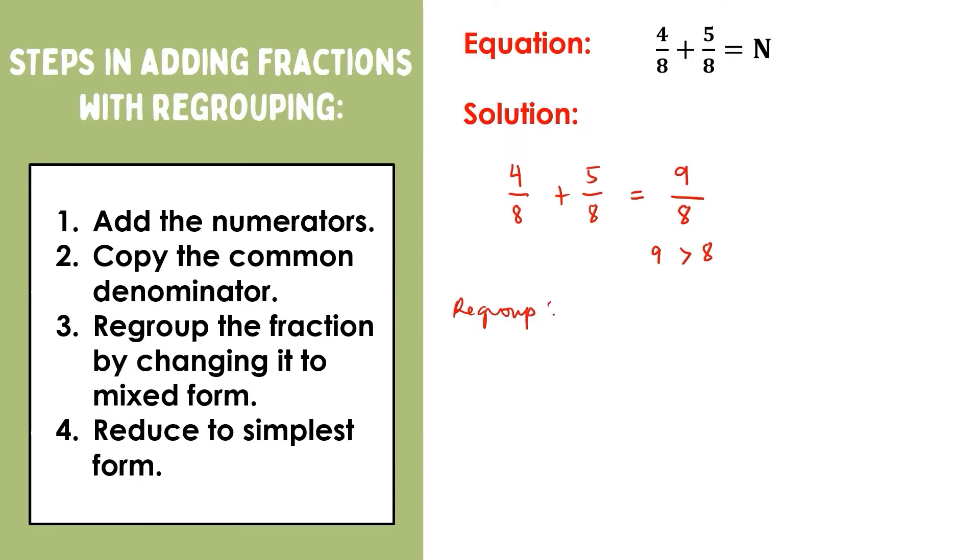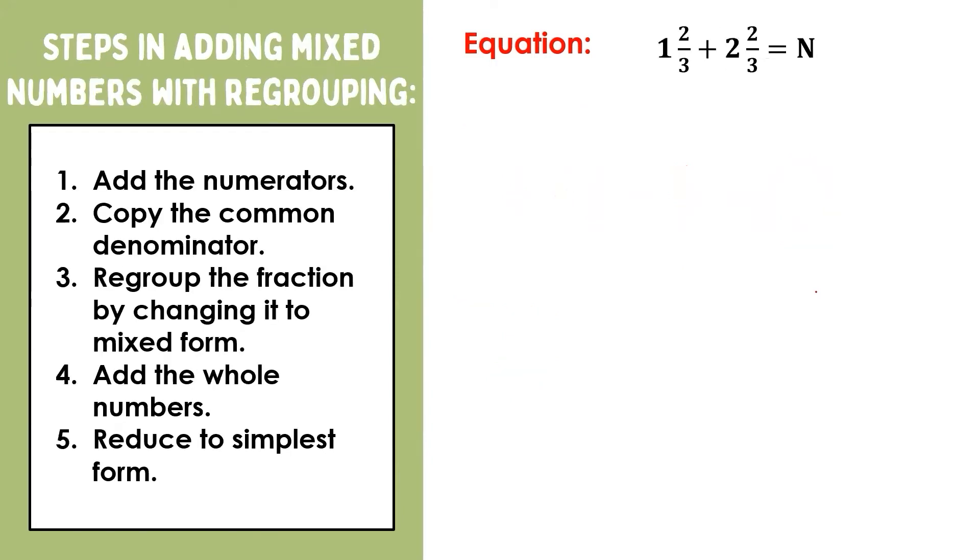Let us divide the numerator by the denominator. That will give us nine divided by eight is one, and one times eight is eight, giving us a remainder of one. Therefore, nine-eighths is rewritten as one and one-eighth. Since one and eight have no common factor other than one, then our answer is already in its simplest form.